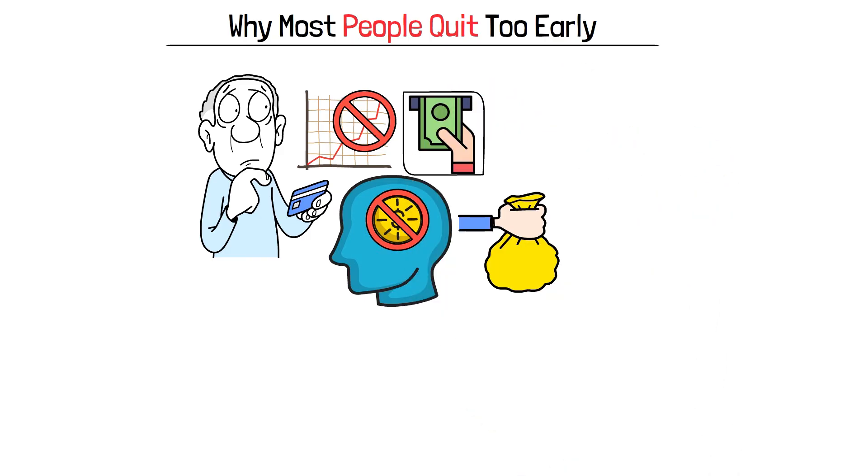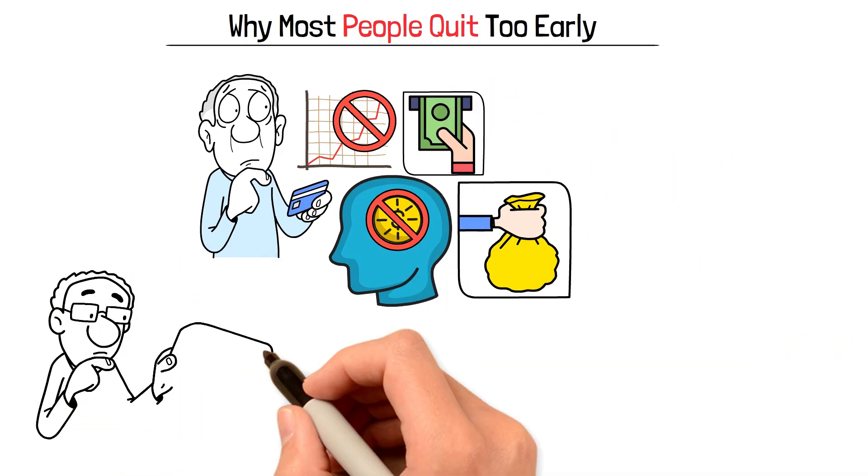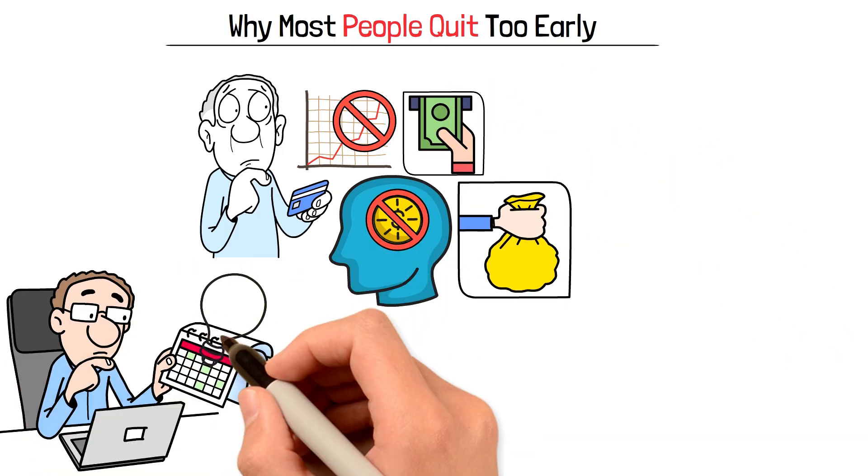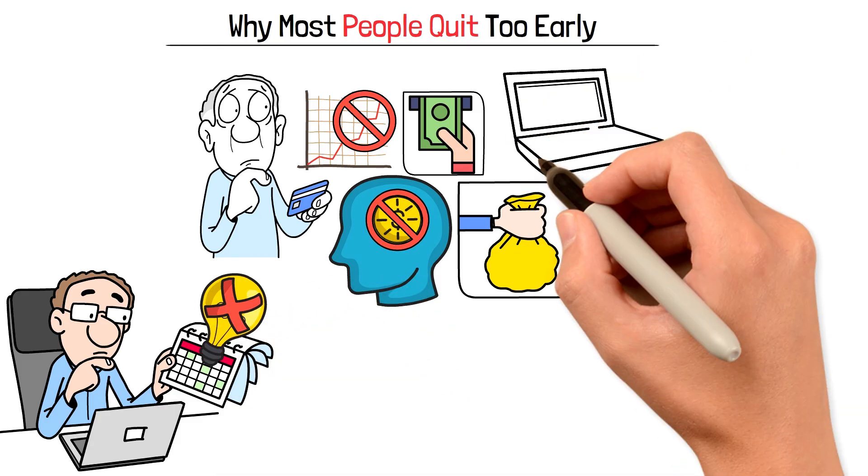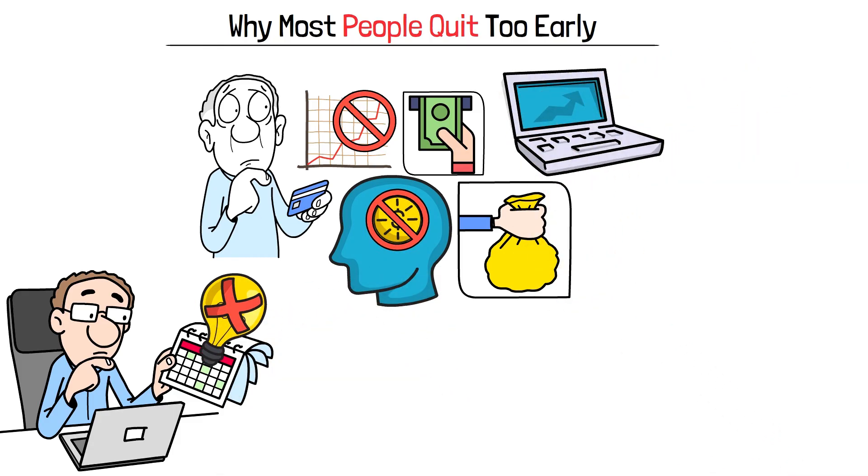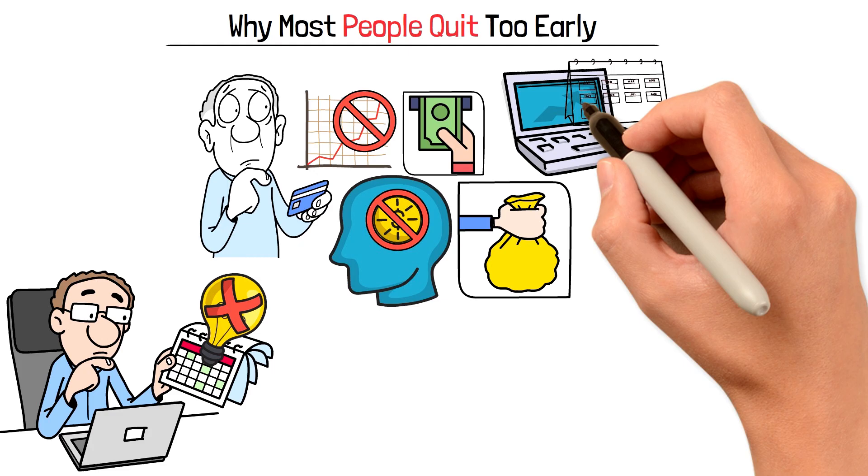This is the compound interest illusion. The early years feel like you're getting nowhere, so you assume the strategy isn't working. But what's actually happening is that you're building the foundation for exponential growth that will blow your mind in later years.